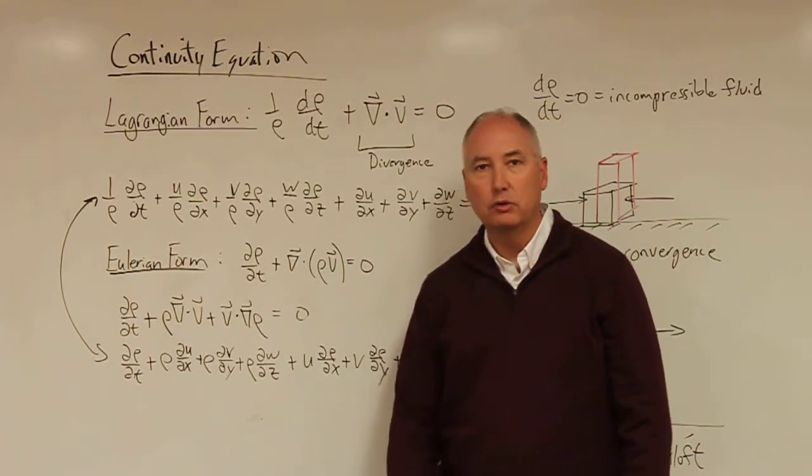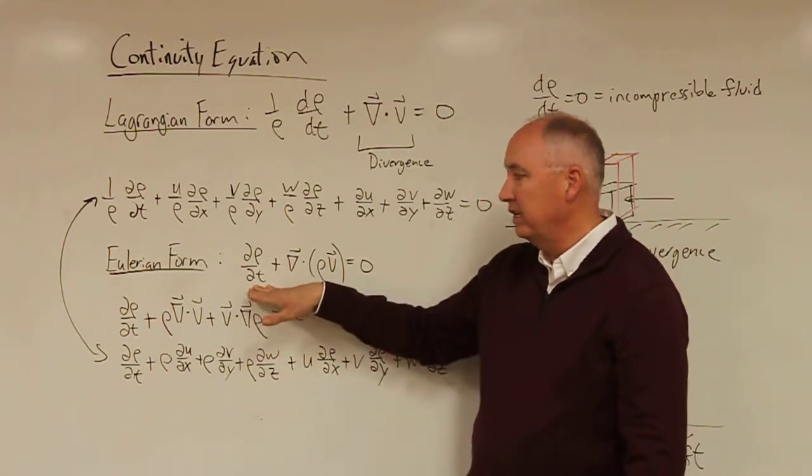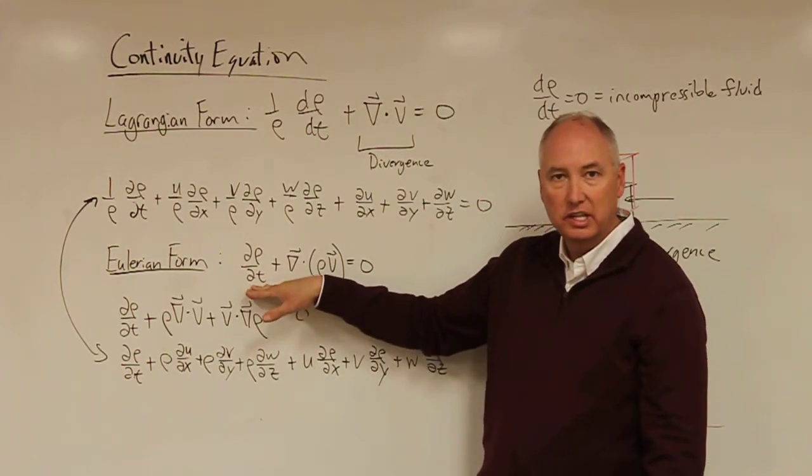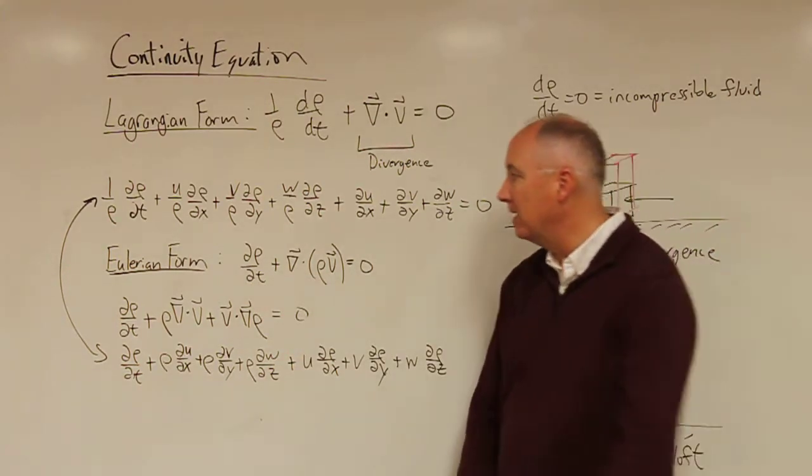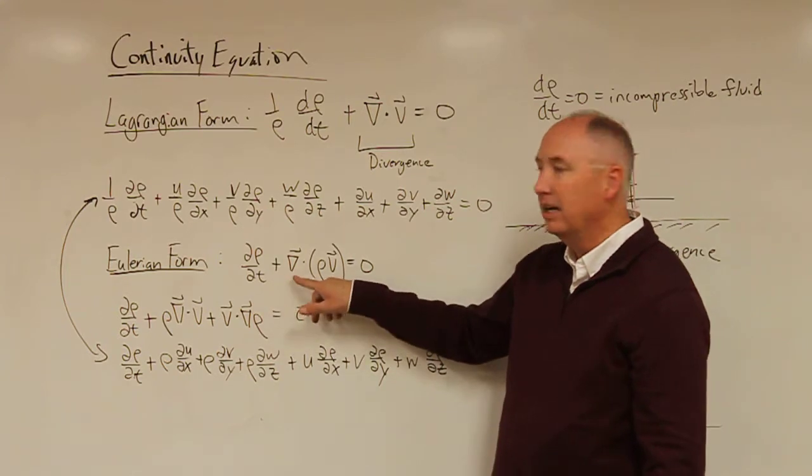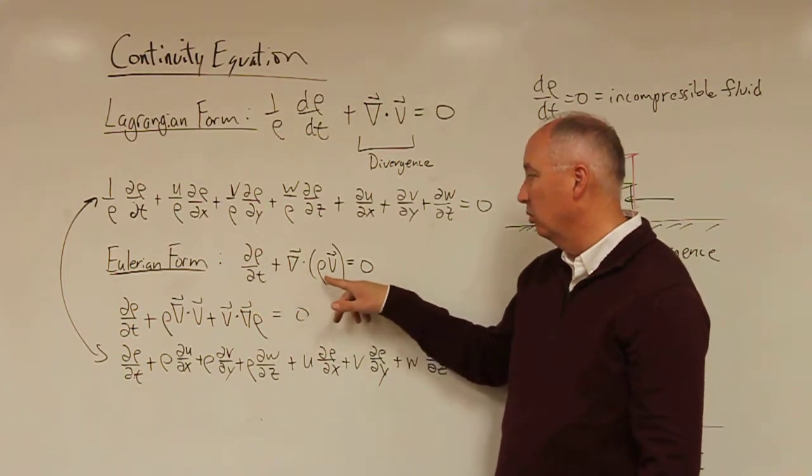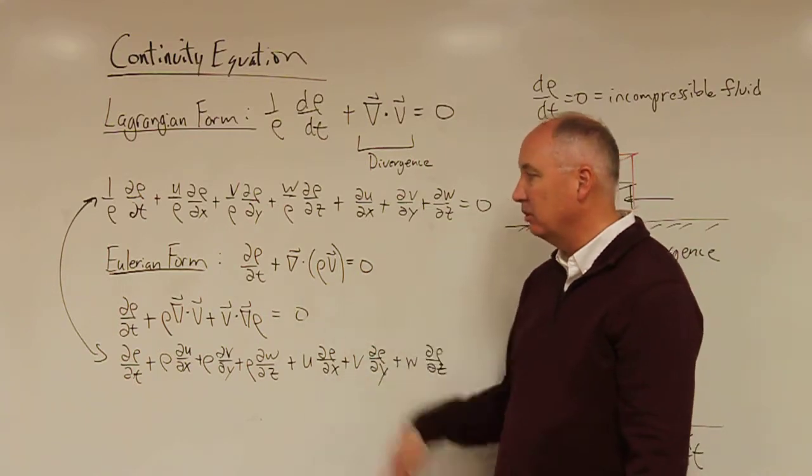We also have the Eulerian form, which basically says at a given point, what is the change in the local density, the rate of change in local density with respect to time. And that's partial rho over partial t, in this case, plus del dot rho v, where v is the velocity vector and that's equal to zero.